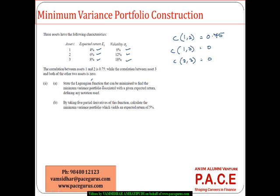State the Lagrangian function that can be minimized to find the minimum variance portfolio. How do we create that Lagrangian function?